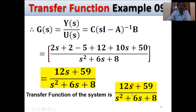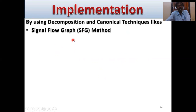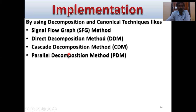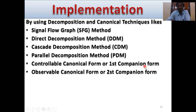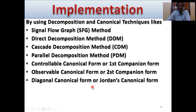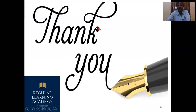From this transfer function, by using decomposition and canonical techniques such as signal flow graph method, direct decomposition, cascade decomposition, parallel decomposition, controllable canonical (first companion) method, observable canonical (second companion) form, and diagonal canonical or Jordan canonical form, we can easily solve the state equation, state matrix, state diagram, signal flow graph, controllability, observability, and stability of the system.